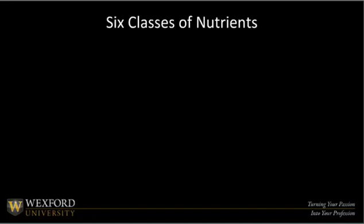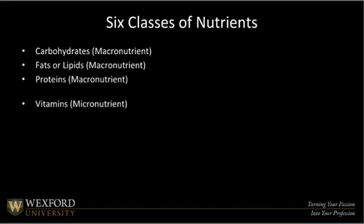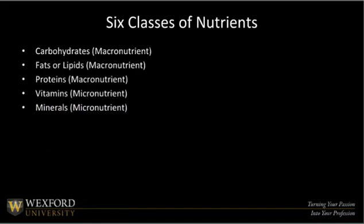Human life requires six nutrients. The first that we'll discuss are macronutrients, and include carbohydrates, fats or lipids, and proteins. Then we have the micronutrients, which include vitamins and minerals. The sixth nutrient is water, and is sometimes classified as a macronutrient in terms of how much of it we need to live, but it's not a source of energy for us.